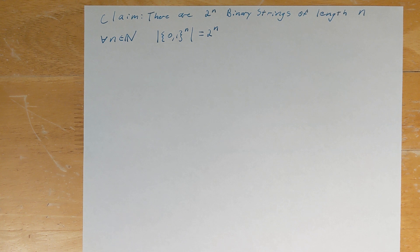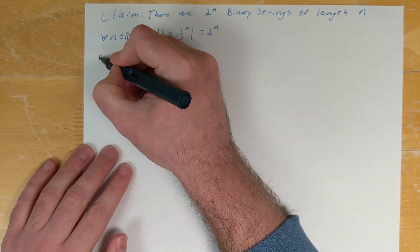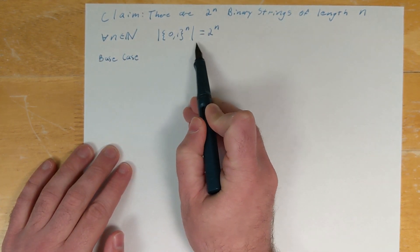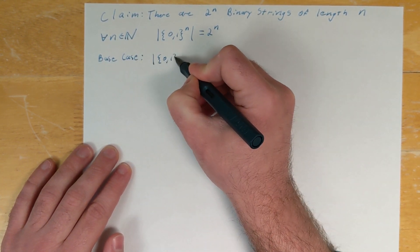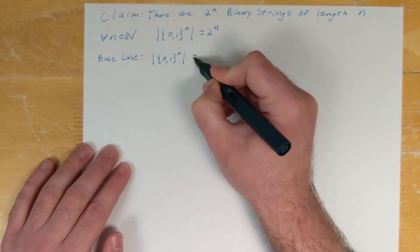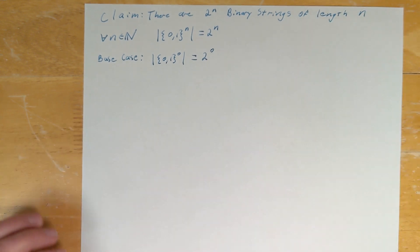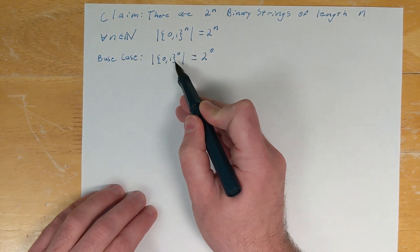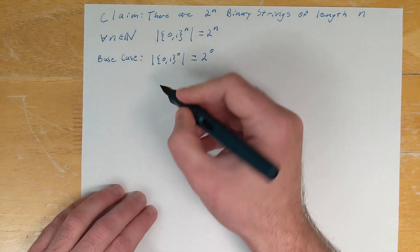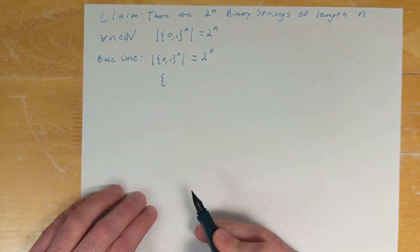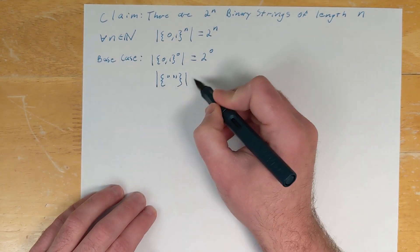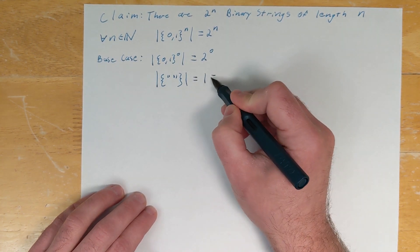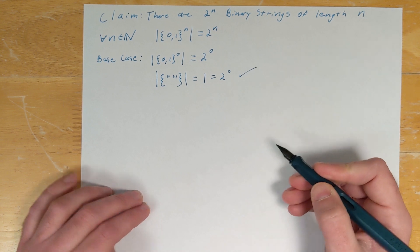The first thing we need to do in a proof by induction is establish and prove our base case. In this case, we need to show that this statement is true for n equals zero — that the size of {0,1} to the zero power equals 2 to the power zero. The number of binary strings of length zero: there's only one, the empty string, so {0,1} to the zero power is just the set containing the empty string, and its size equals one. And 2 to the zero is also equal to one. So our base case is done.